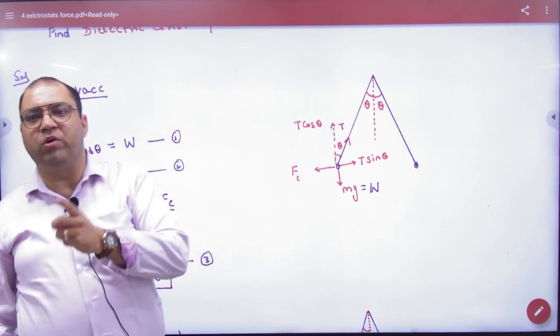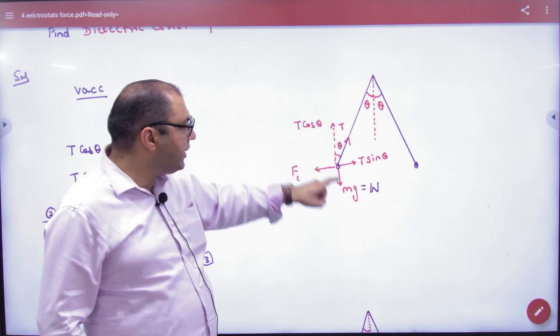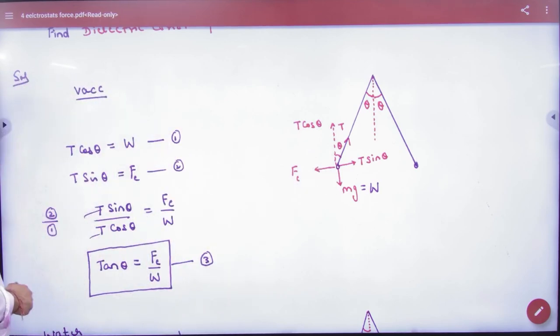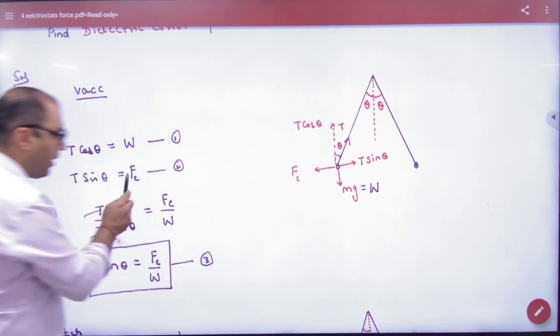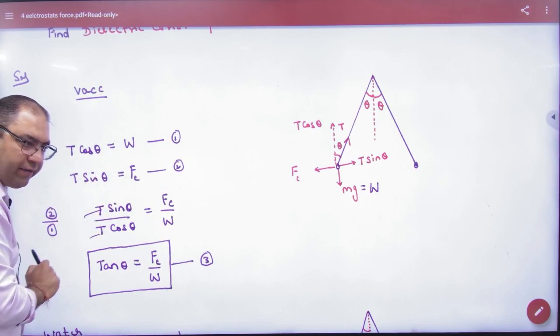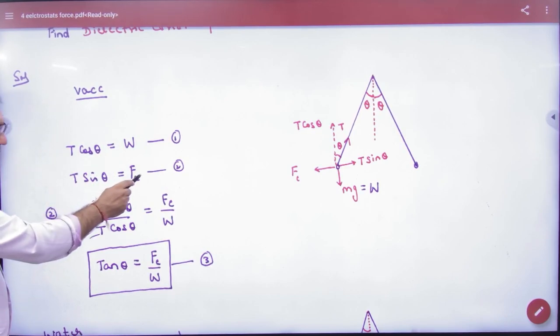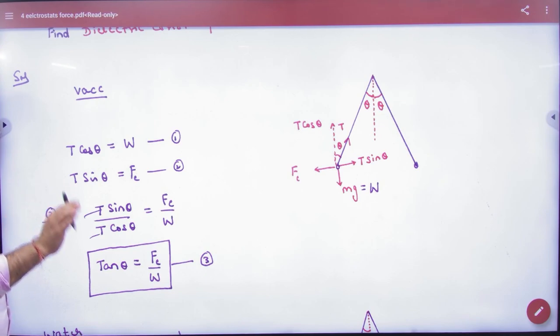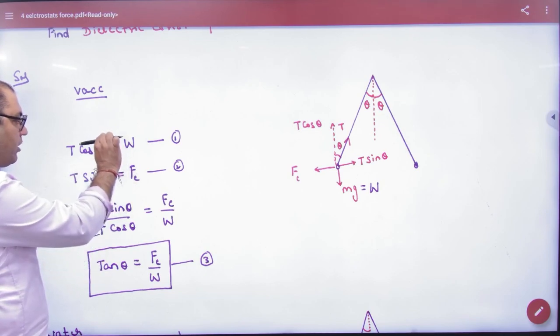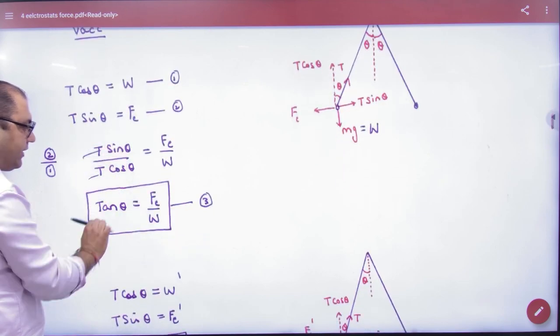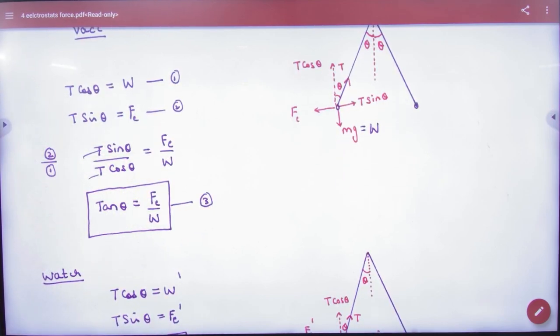Because there is an equilibrium given, Tcos theta equals W and Tsin theta equals Fc. Are these two statements clear? Fc is the electrostatic force. What is the medium? Vacuum. Now divide equation number 2 and 1. T cancels. Tan theta equals Fc/W, equation number 3.